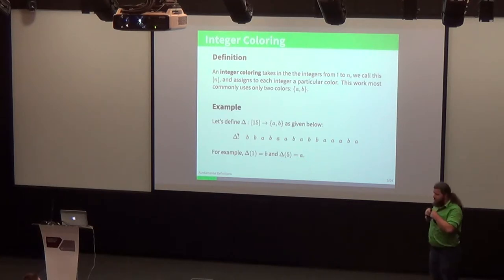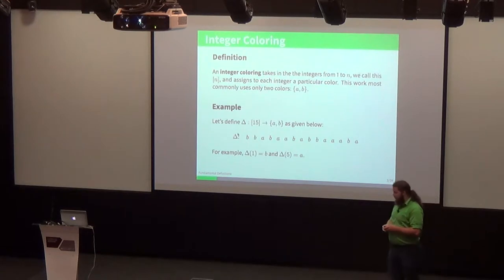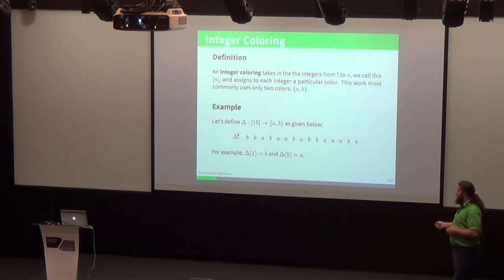Here we have an example of coloring 1 through 15, which we use bracket notation omitting the 1 for ease. We can see that we've assigned to each of these integers 1 through 15 a particular letter, which we're calling colors. For example, delta of 1 we've colored with B, delta of 5 we've colored with A, and for each of those we could write out a similar equation.